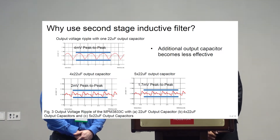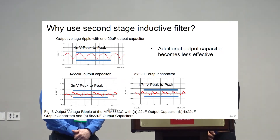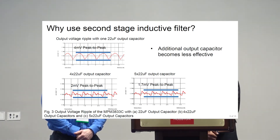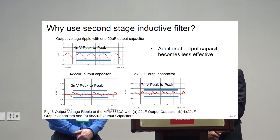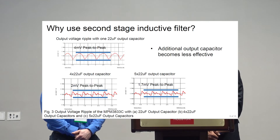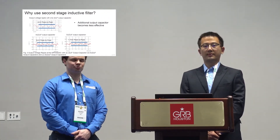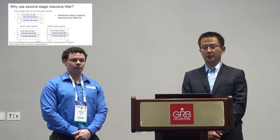We also put this analysis into simulation using Simplis. The operating condition of our module is: Vin = 5V, Vout = 1.2V, and load = 2A. First, we placed a 22μF output capacitor on the module — the output voltage ripple is 4mV peak-to-peak. Then we added more output capacitors. In figure B, we show the result with three 22μF output capacitors, and the output voltage ripple is reduced to 2mV peak-to-peak. With four output capacitors in parallel, the peak-to-peak voltage ripple can only reduce from 2mV to 1.7mV. That's why putting more and more output capacitors cannot help us achieve an ultra-low noise design.